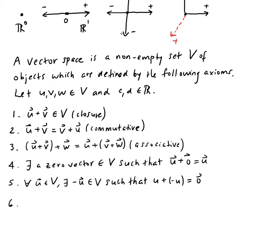Six: you take a scalar, c is a scalar here, so you take the scalar and multiply it by u, that's got to be in the same vector space.